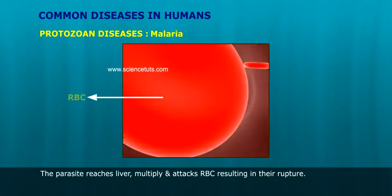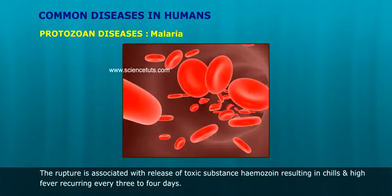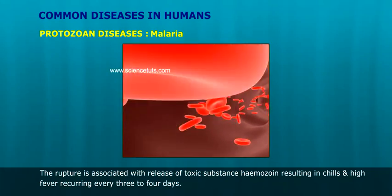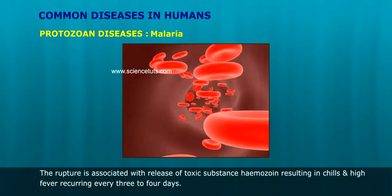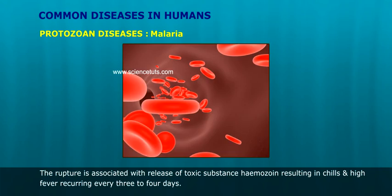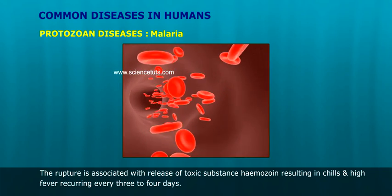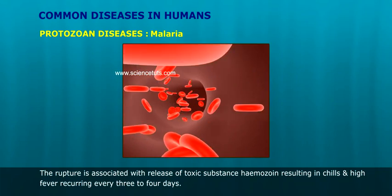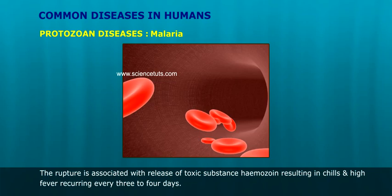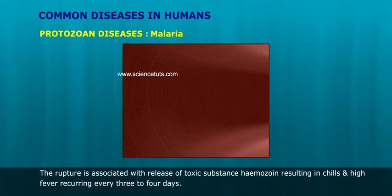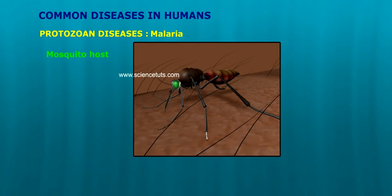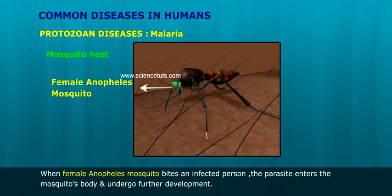This results in the rupture of RBCs. The rupture is associated with the release of a toxic substance called hemozoin, resulting in chills and high fever recurring every three to four days.